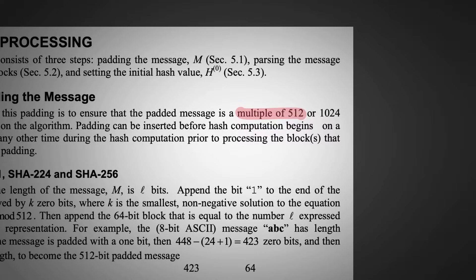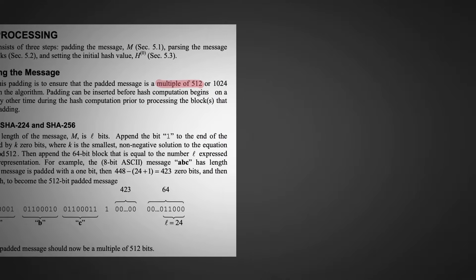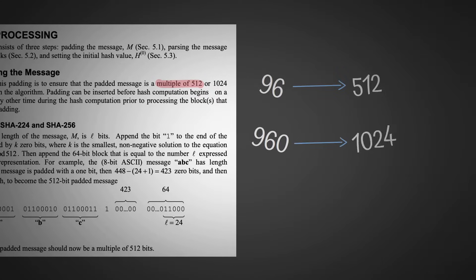So we round up to the nearest multiple of 512. In our case, we're going to round up to 512. But if our input was 960, we would round up to 1024.